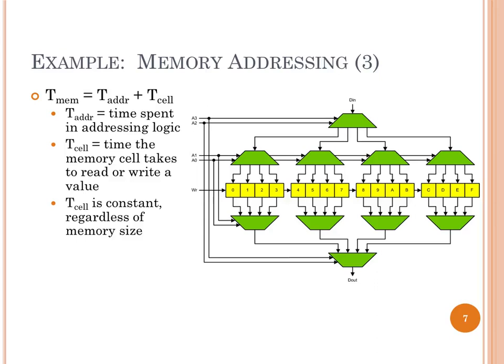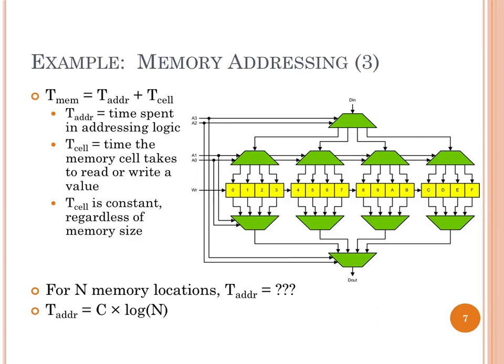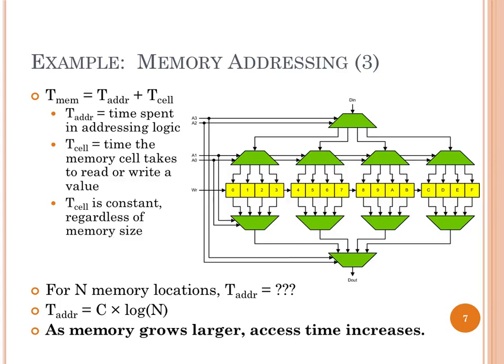For N memory locations, the question is how does the addressing delay scale with the number of memory locations? Pretty obvious — I squared the number of cells, and it doubled the cost. It's logarithmic. So we have some constant plus a logarithmic cost that increases as our number of memory cells increases. Memory grows larger, access time is going to increase.